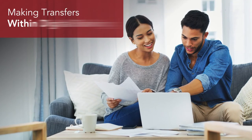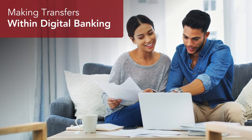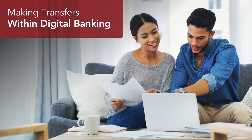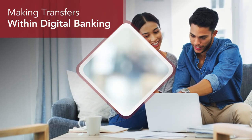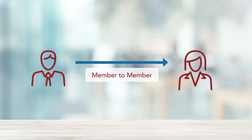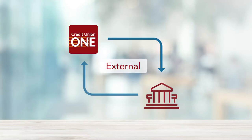At Credit Union 1, our next-level digital banking platform makes completing transfers simple, secure, and convenient. You have the power to complete three different types of transfers within online and mobile banking: transfers between your Credit Union 1 accounts, transfers to or from your Credit Union 1 deposit account to another member's Credit Union 1 deposit account, and transfers to and from your Credit Union 1 deposit account to a deposit account at another financial institution.